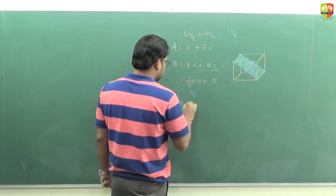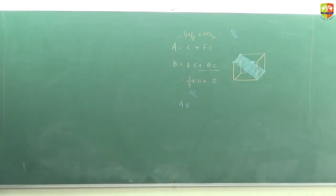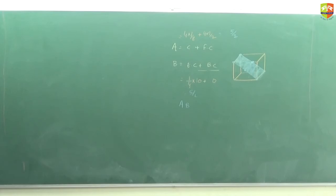So the answer ratio is 1:1:1. You just need to imagine the plane and determine which atoms are present, then multiply by their contribution to get the net A, B, and C values.